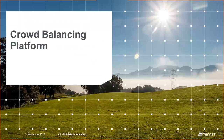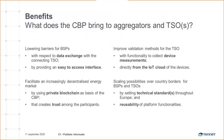The next topic is the crowd balancing platform in general — what does it do, what were the goals, what are the benefits? There are roughly four topics. First, it's about lowering barriers for balancing service providers and market parties that have flex. We know we need all that flexibility in the future. At the moment, the requirements and data exchange methods used from the TSO side are sometimes not future-proof for aggregators with many small assets. The CBP should lower those barriers by providing a relatively easy-to-access interface.